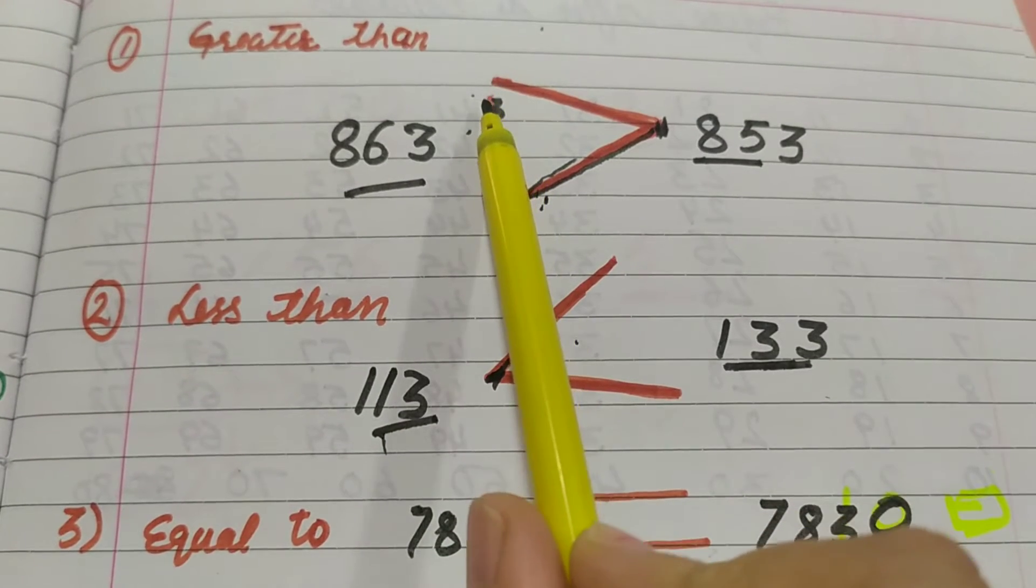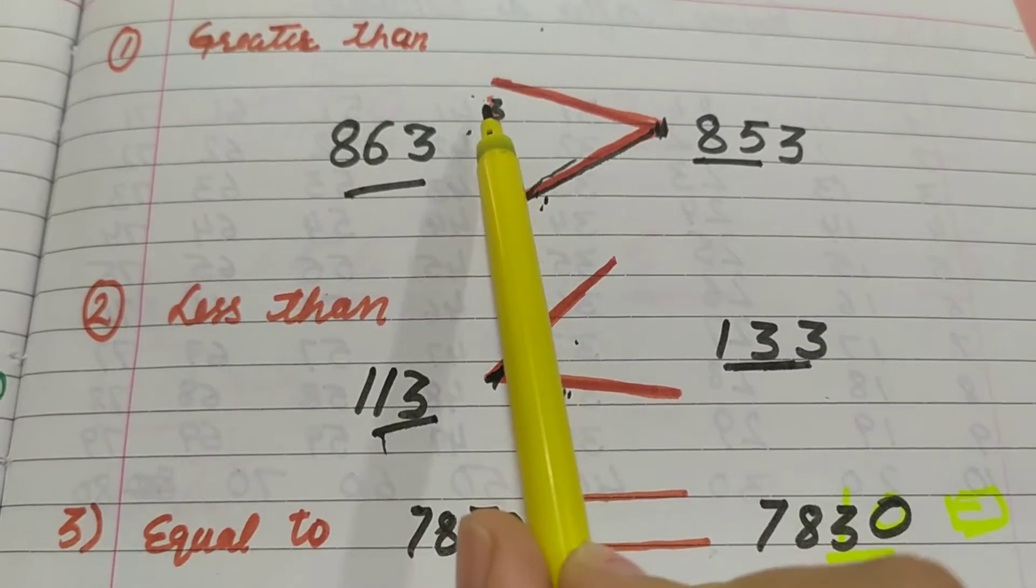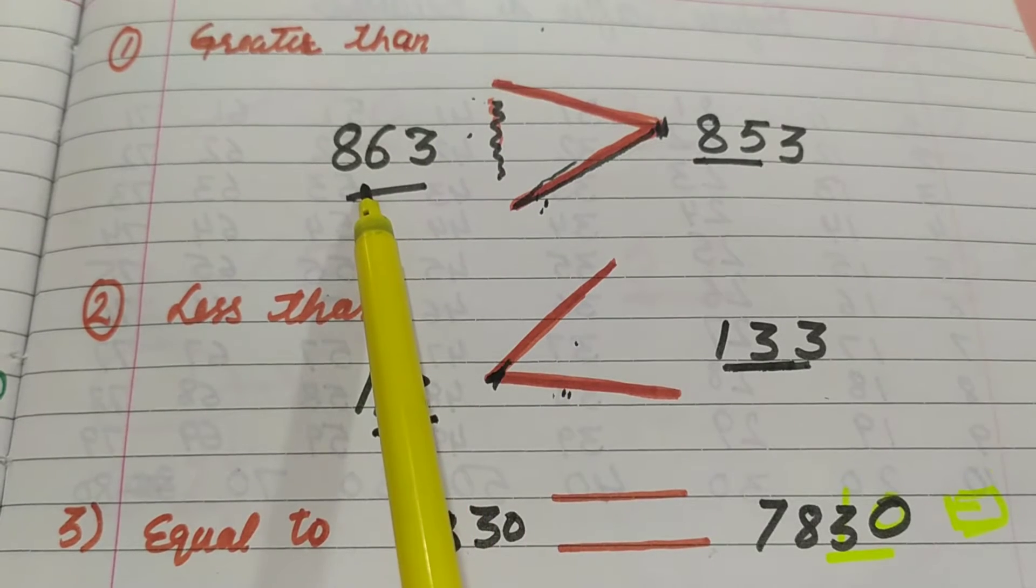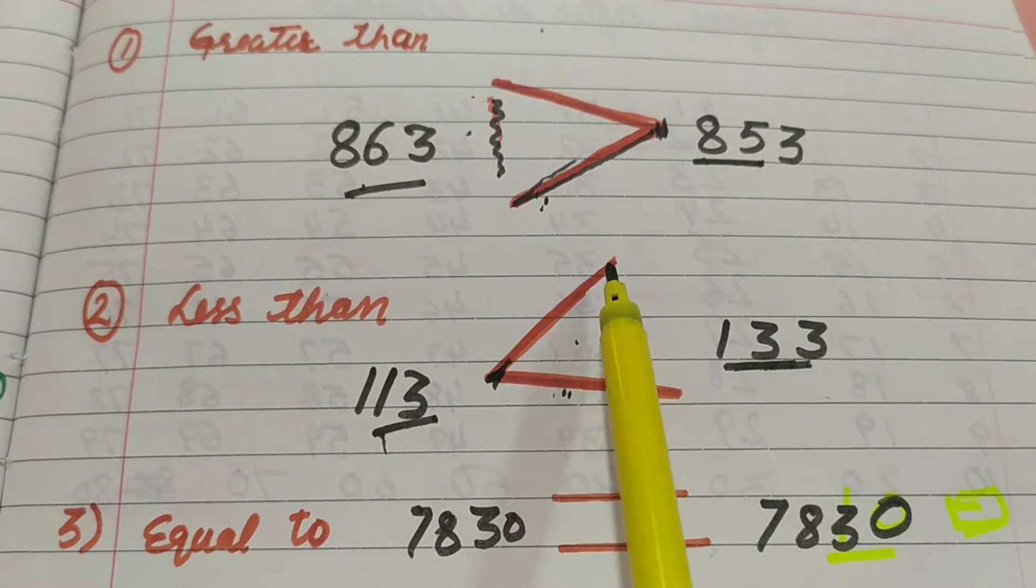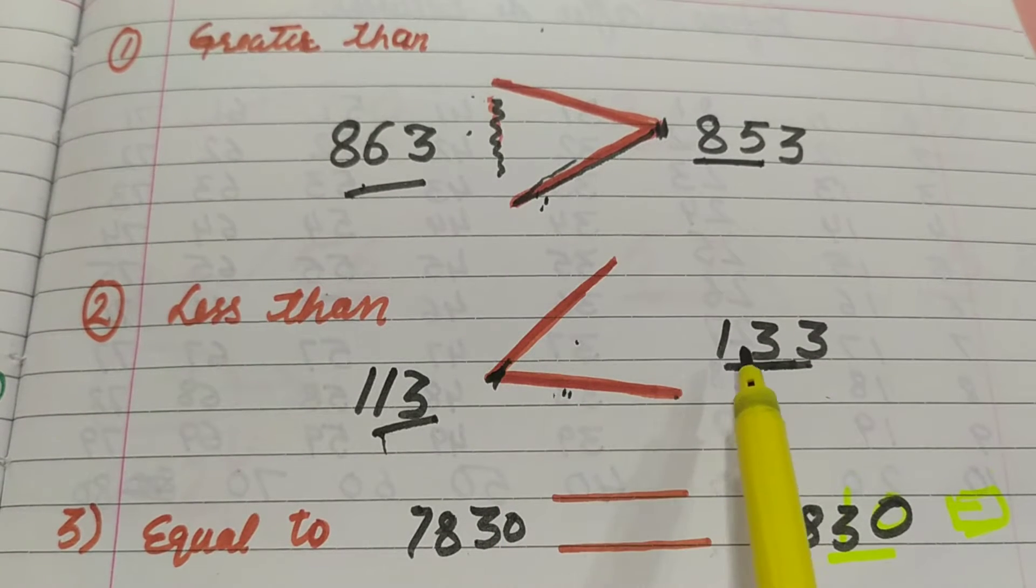So alligator's mouth is greater number and back is smaller number. So alligator's mouth is bigger number.